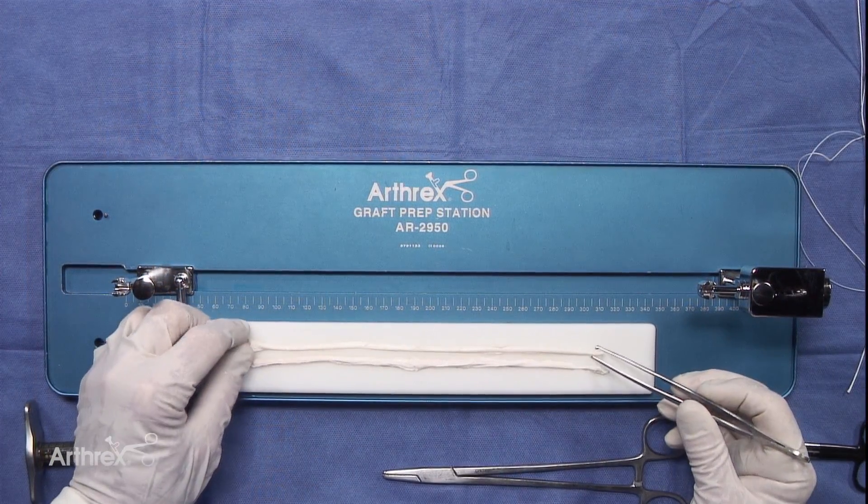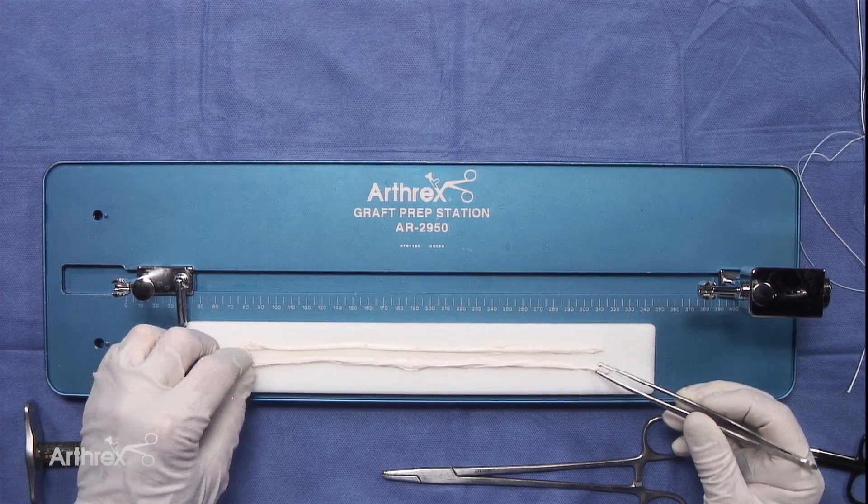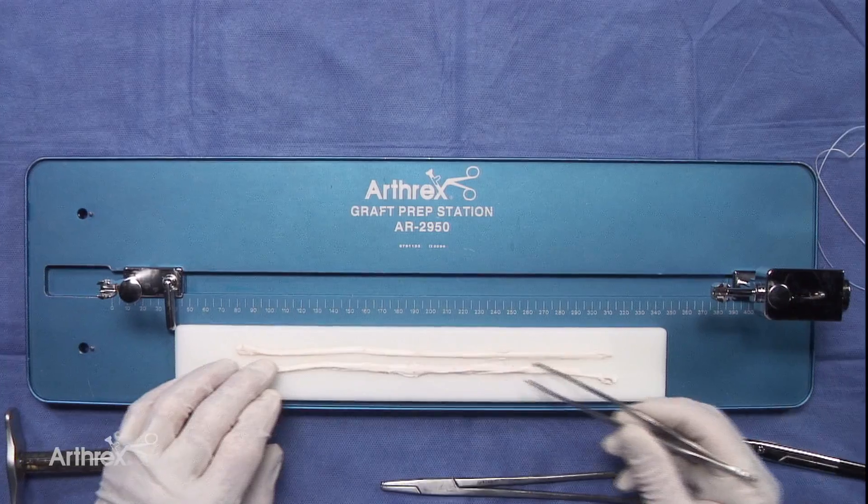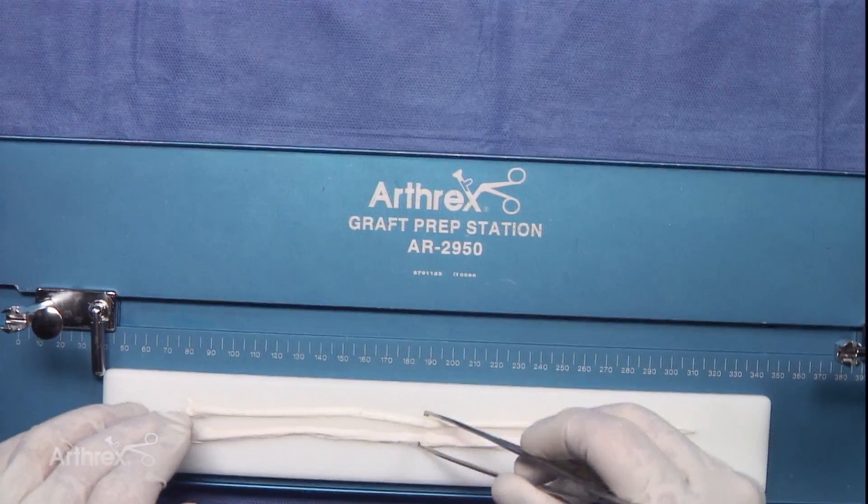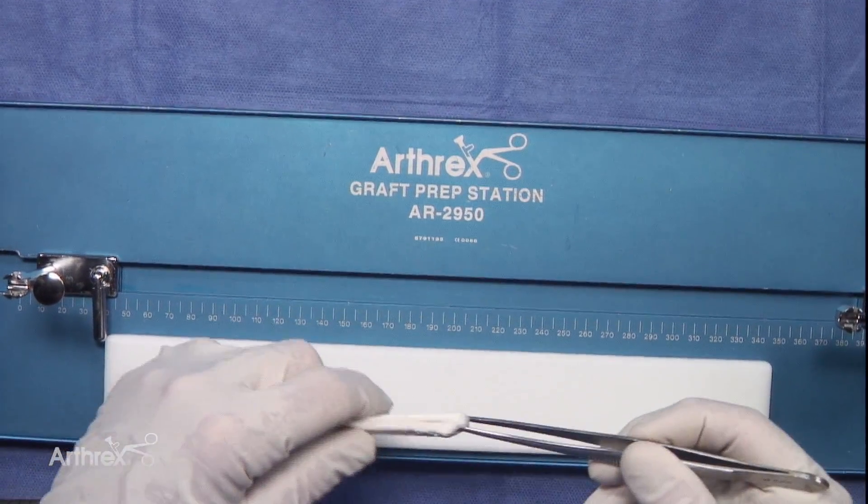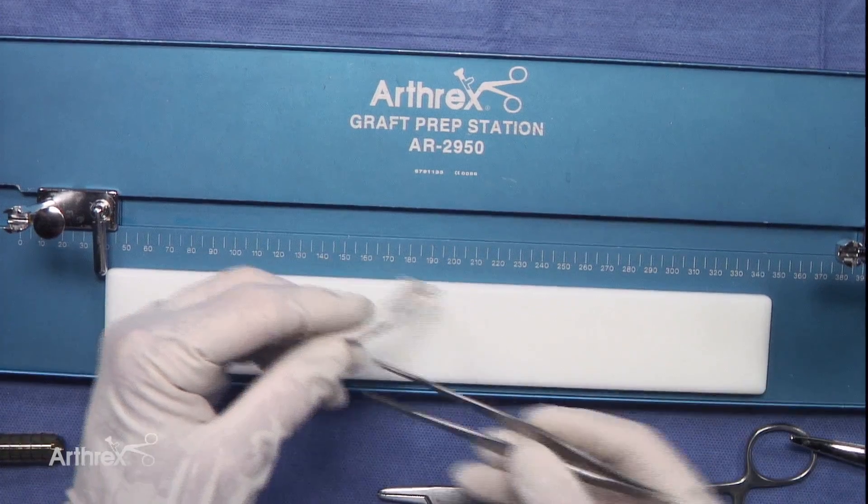This is really a simple technique, and I think that you will find it useful for patients with small stature to increase the overall diameter of the graft. This is a good example of two tendons, gracilis and semitendinosus, and you can see the very small diameter. If you were to take these and double them, we've already measured it, and it's a 7-millimeter diameter.